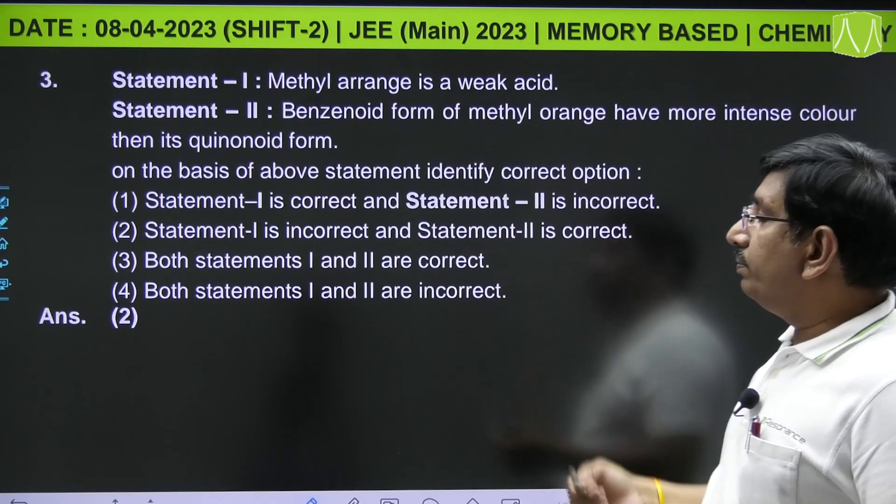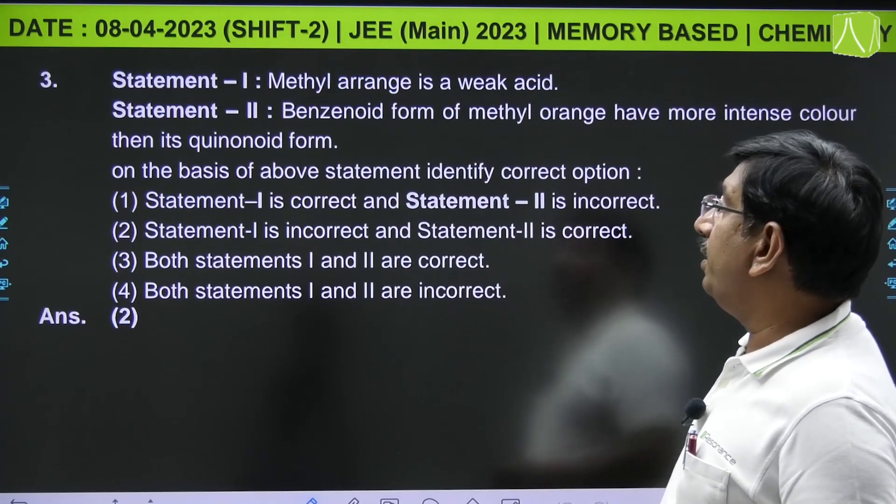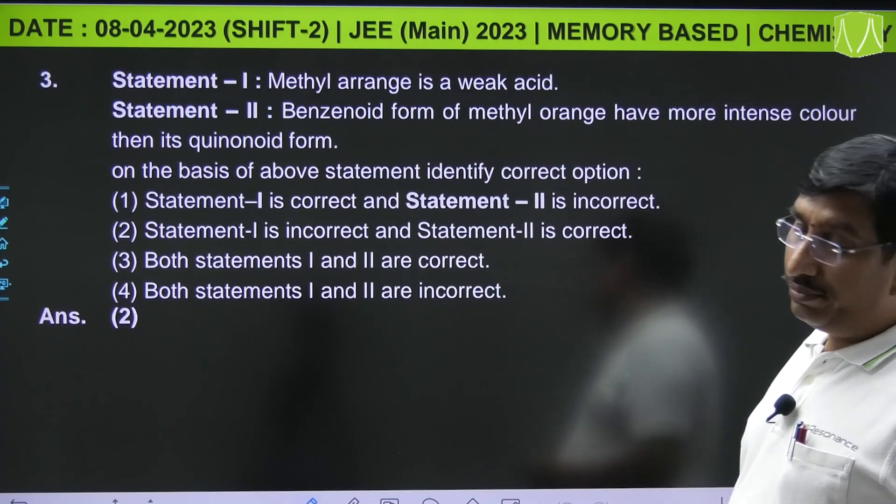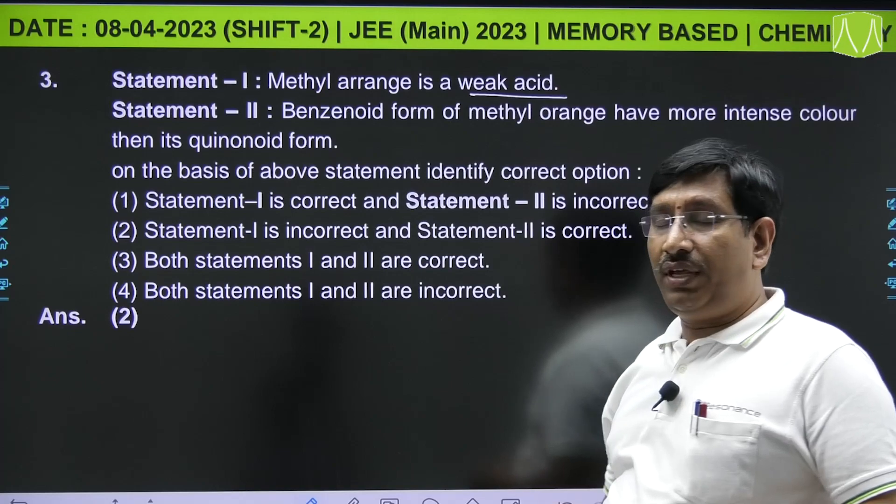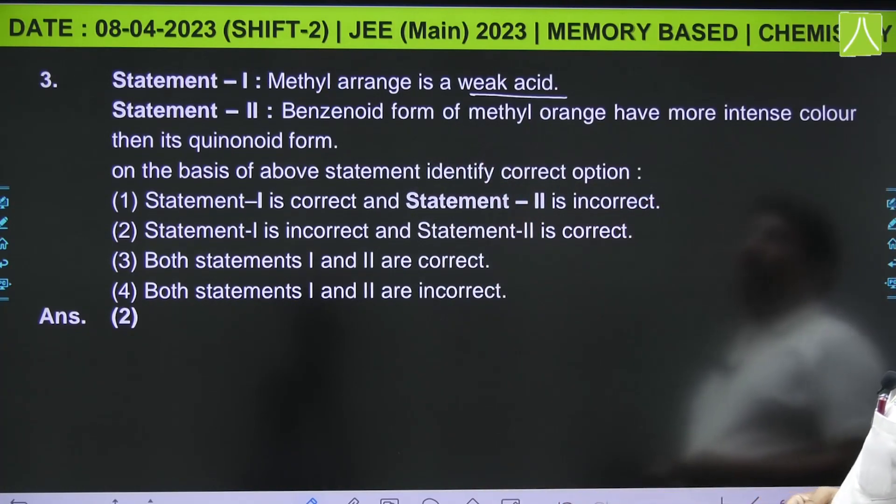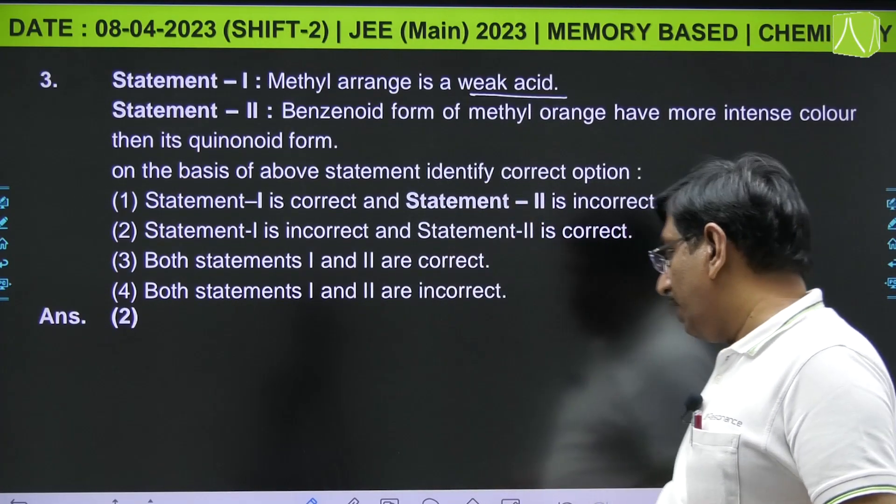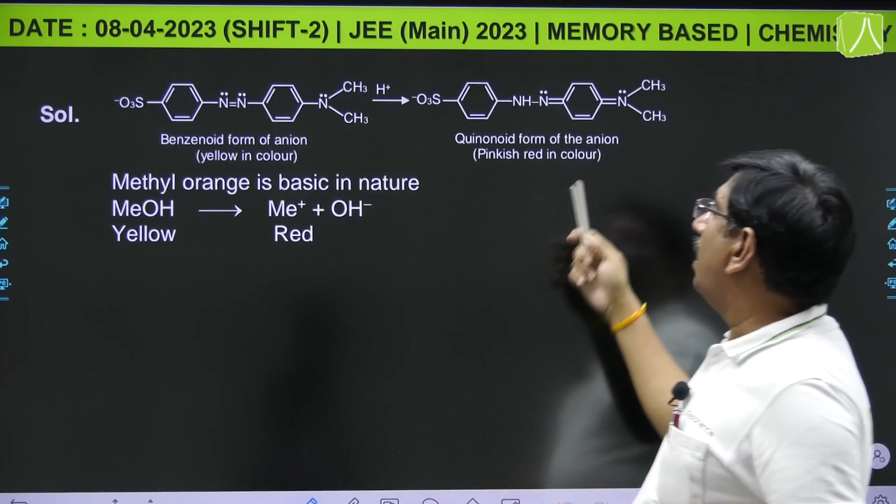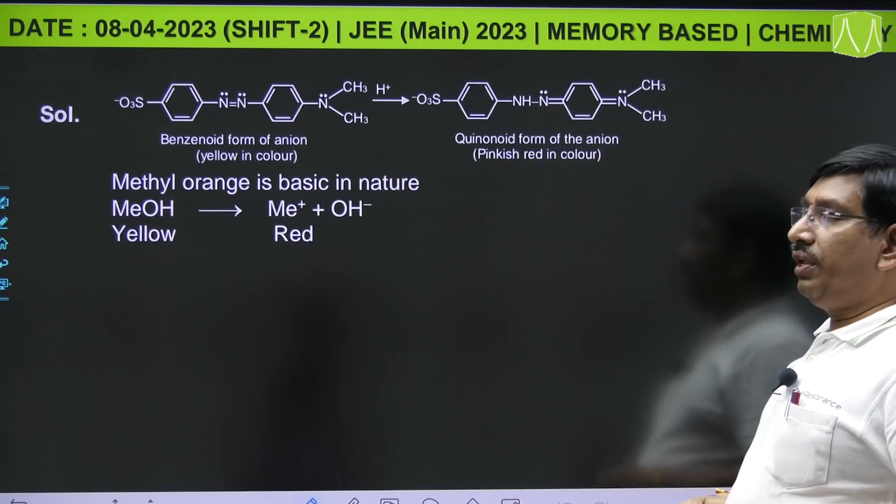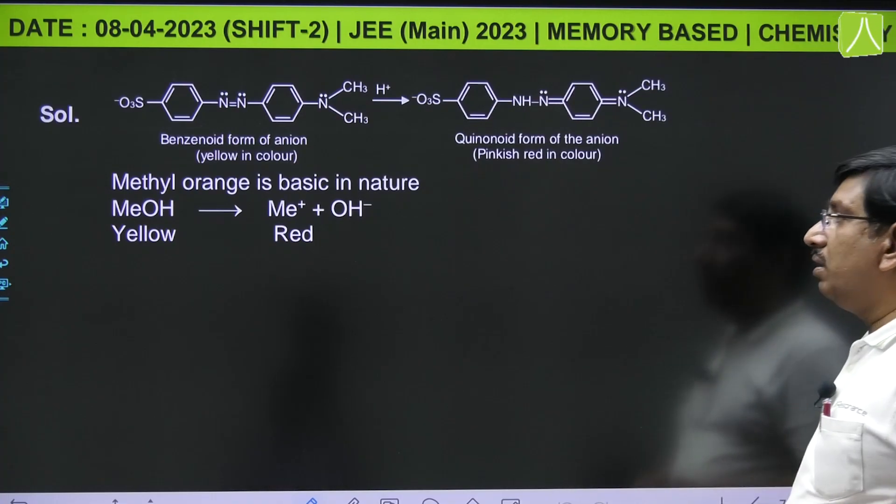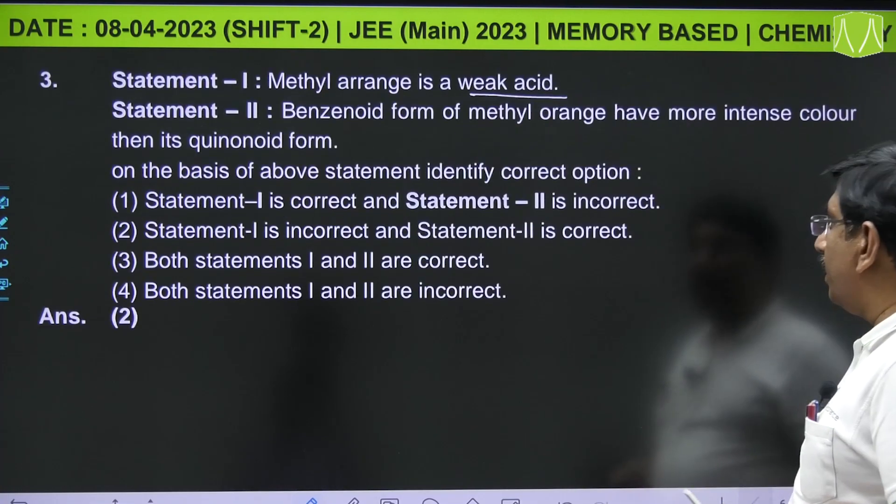This is from ionic equilibrium, indicators related. Statement 1: methyl orange is a weak acid. Yes, because it is a weak organic base, methyl orange. Statement 2: benzenoid form of methyl orange has more intense color than its quinonoid form. Yes, it is correct. The benzenoid form has yellow color and quinonoid form has pinkish red color. So statement 1 is incorrect, but statement 2 is correct.